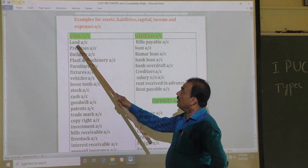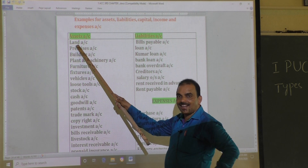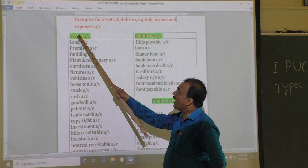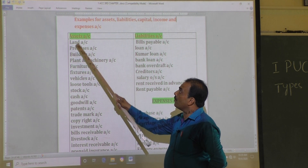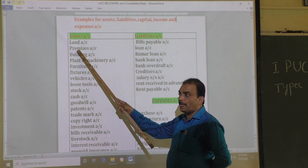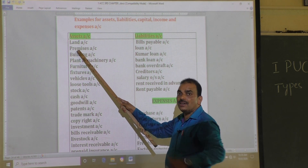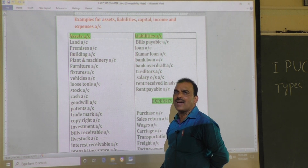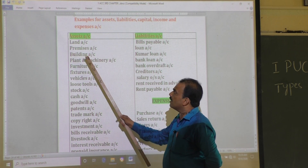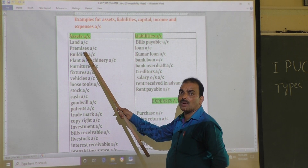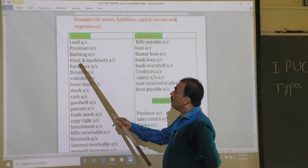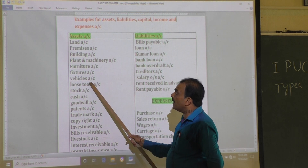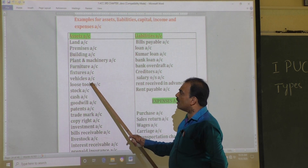Asset account examples: land is an asset account. Premises — which means the land or parking area in front of a business (called 'vatara' in Kannada) — is an asset account. Building, plant and machinery, furniture, fixtures, and vehicle are all asset accounts. Loose tools, stock, cash, goodwill (intangible), patent, trademark, copyright, and investment are also asset accounts. Bills receivable and livestock (in the case of a zoo) are also asset accounts.